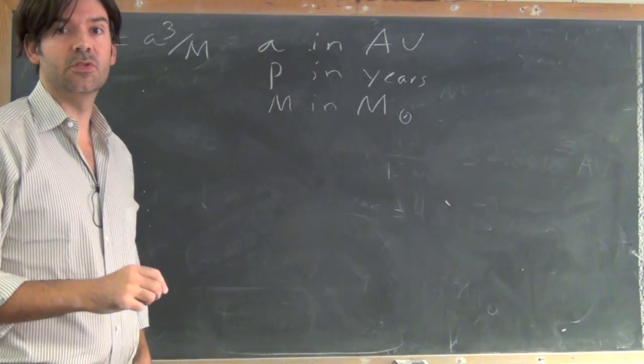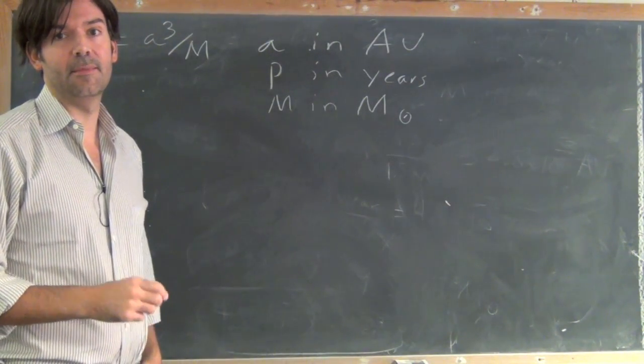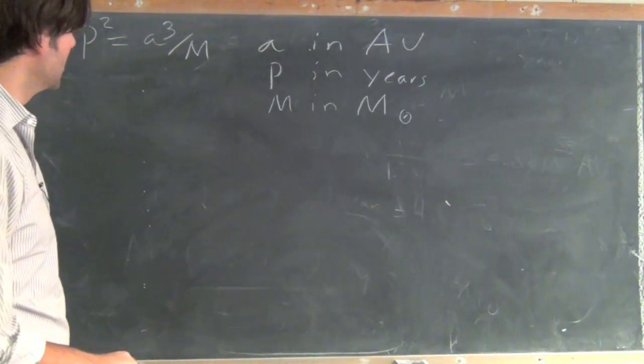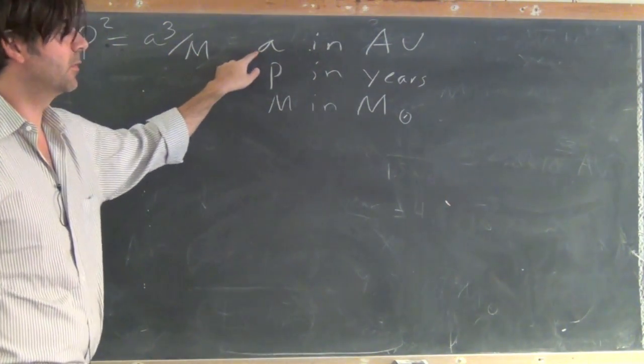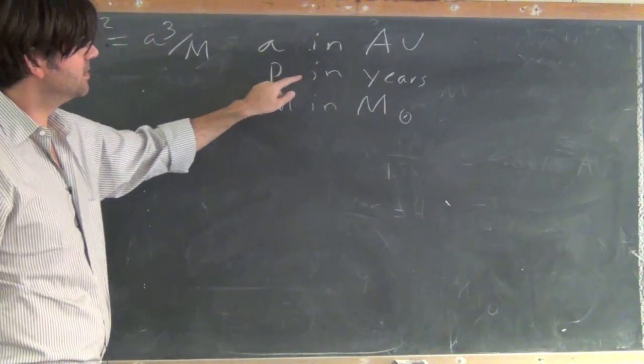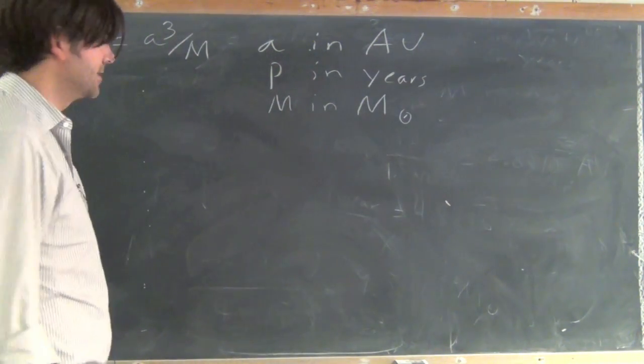Let's use Kepler's law with Newton's correction in order to find the mass of Jupiter. So this is Kepler's law: p squared is equal to a cubed over m, where a is in astronomical units, p is in years, and the mass is written in solar masses.